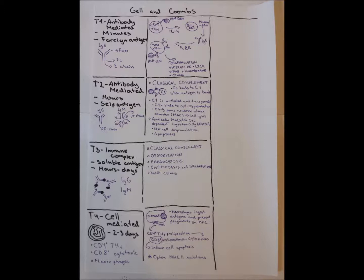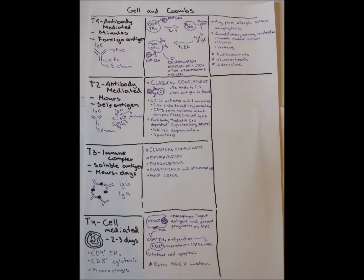Type 1 usually involves hay fever, allergic asthma, and anaphylaxis reactions. Most effects are vasodilation and airway constriction, smooth muscle spasm, mucous secretion, and itching caused by histamine. We use antihistamines for that, as well as glucocorticoids and adrenaline for more serious cases. Adrenaline helps counteract vasodilation and helps clear the airways.